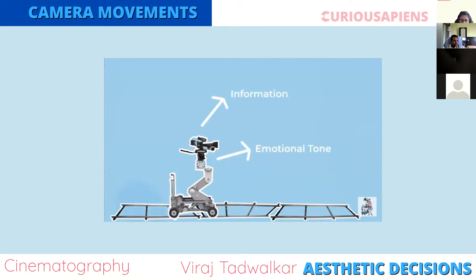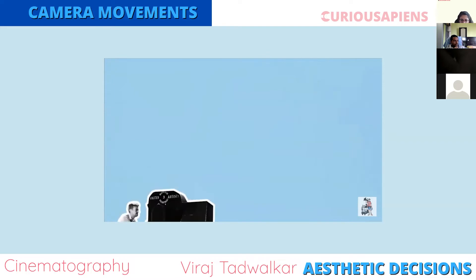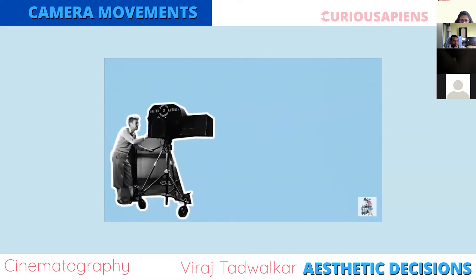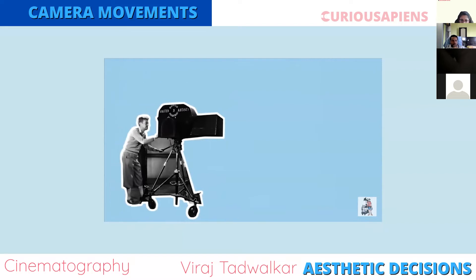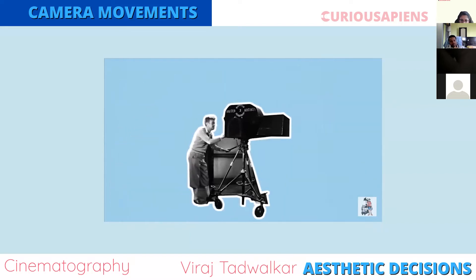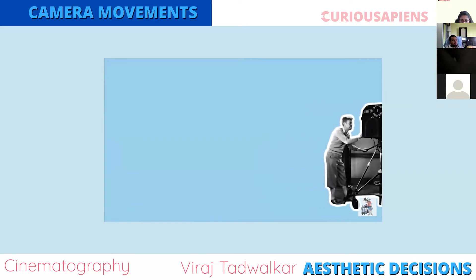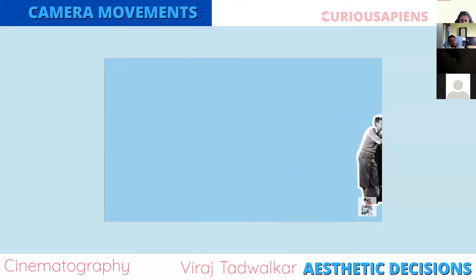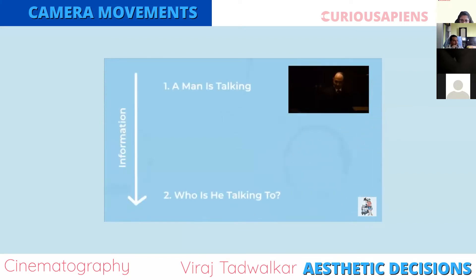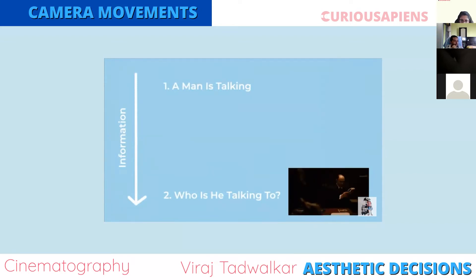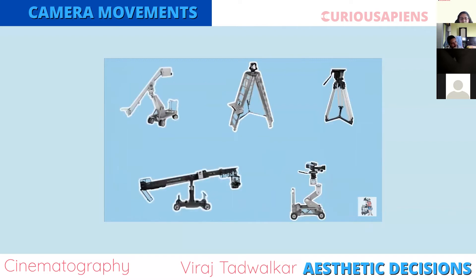From early on in cinema, people worked out that the camera presents a point of view, and that moving the position of the camera in different ways during a shot can have different effects on how that shot is perceived by audiences. The way in which information on screen is presented, and in what order that information is presented, can also be controlled by the motion of the camera.